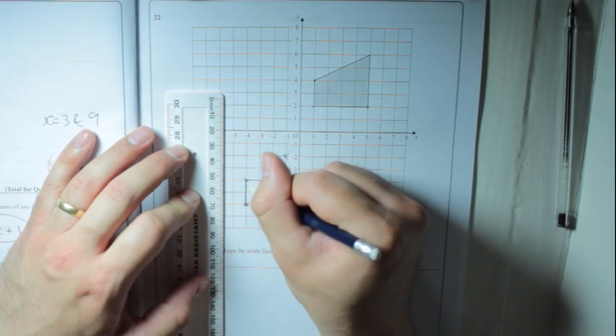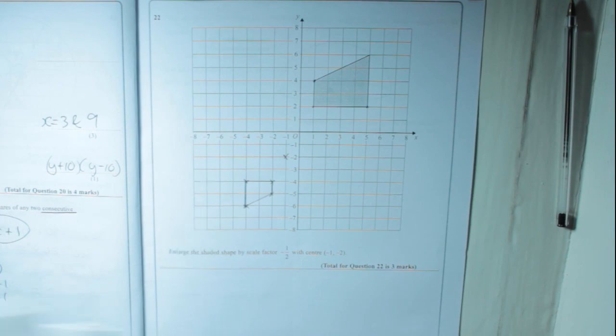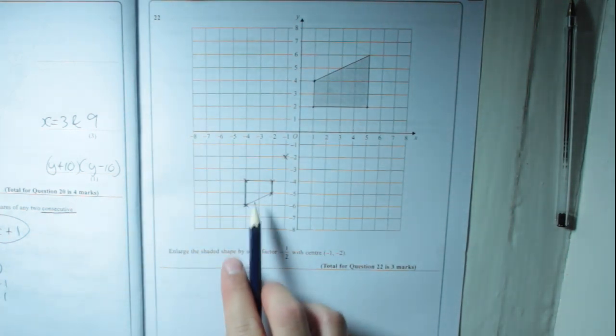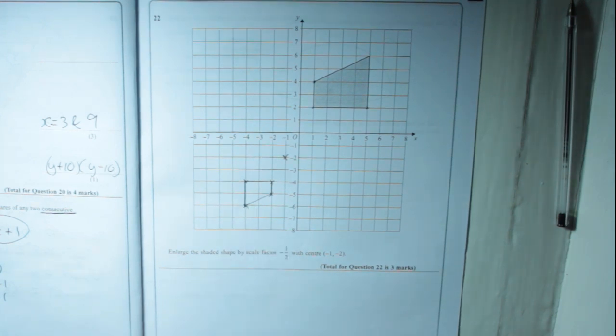Let's try and make sure it's on the line. And there is our enlargement by scale factor minus 1 half. I know it's smaller, but technically it's still an enlargement.